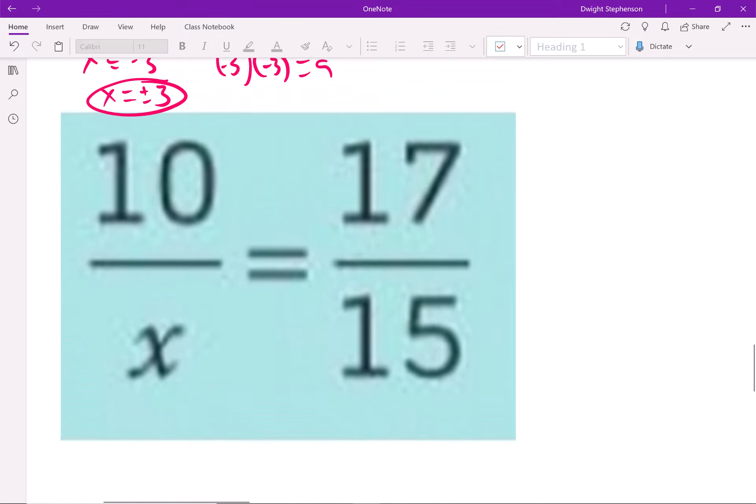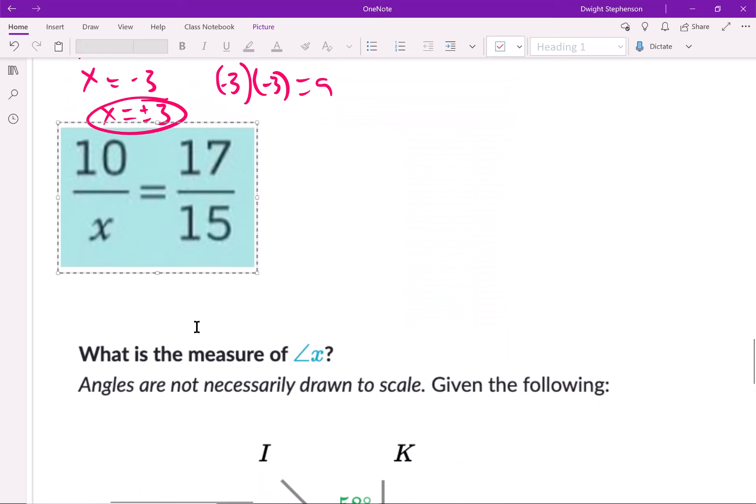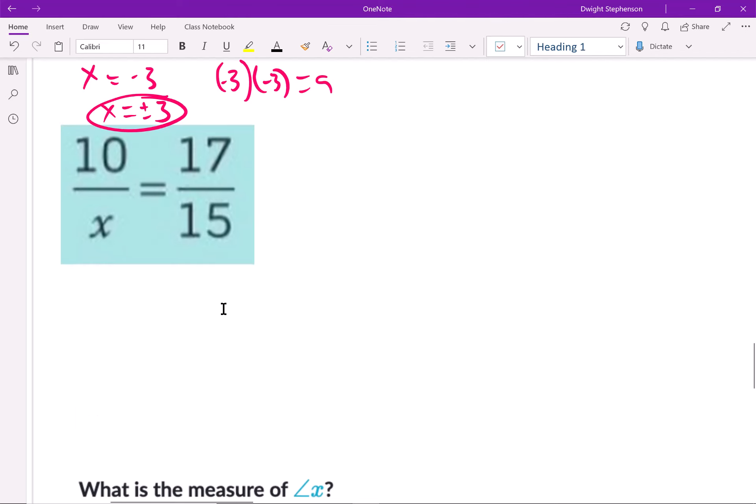This one is asking us to solve this proportion problem. Lots of different ways to do it. Again, the goal if you're solving an equation is to get x by itself. So one way, we don't want x in the denominator, so one way to get rid of it is we're going to multiply both sides by x. So that's going to cancel here. You're going to be left with 10 equals 17x, 17 over 15 times x.